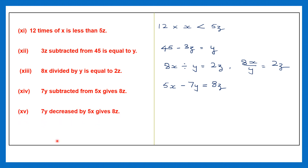Question 15: 7y decreased by 5x — there's no word 'from' here, so 7y simply decreased by 5x. 'Gives' means equals 8z. So 7y minus 5x is equal to 8z.